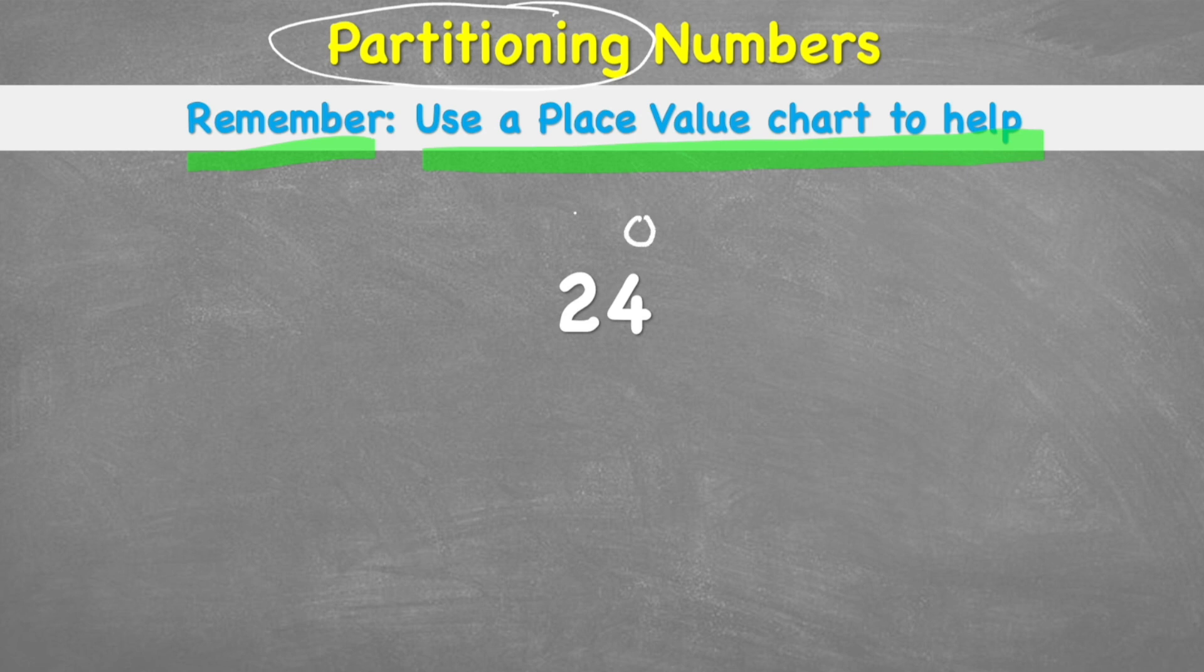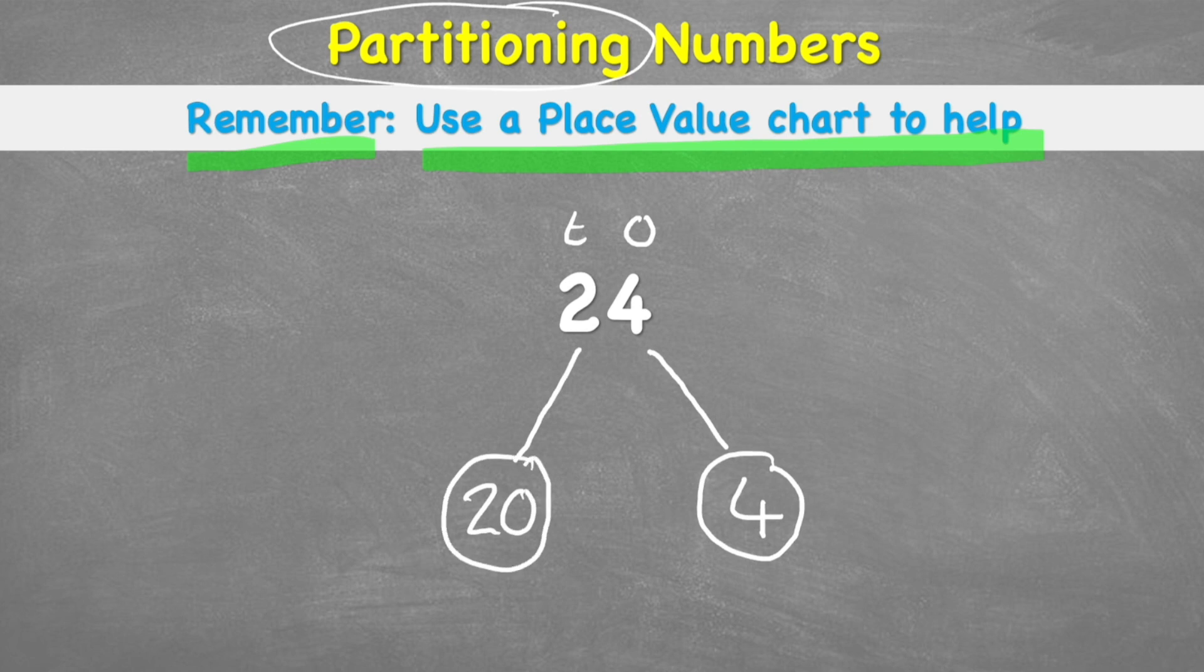We have a strategy of partitioning the number. So I can partition my 24 by looking at it as four 1s and two 10s. So when I'm partitioning, I can split my four 1s into just a single 4. And I can split or partition my two 10s, which would be 20. So my partitioned version of 24 would be a 20 and a 4.